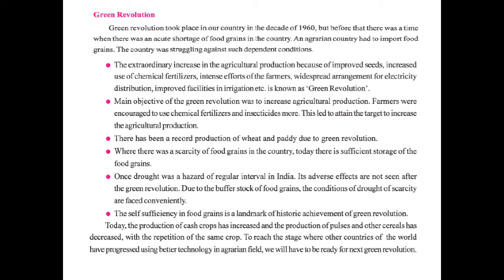Now let's go with the next topic: Green Revolution. The Green Revolution took place in India in the decade of 1960. Before that, there was an acute shortage of food grains and the country had to import food grains. The extraordinary increase in agriculture production due to improved seeds, increased use of chemical fertilizers, intense efforts of farmers, better electricity distribution, and improved irrigation facilities is known as the Green Revolution.